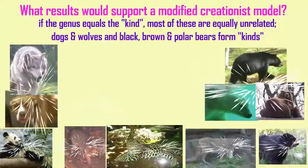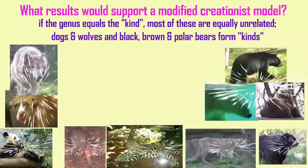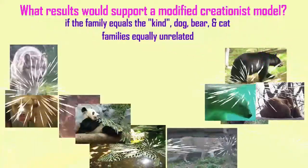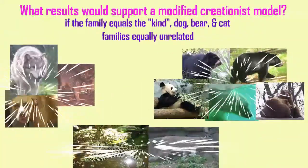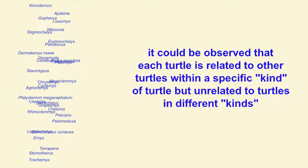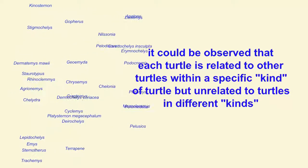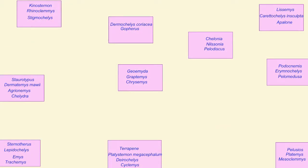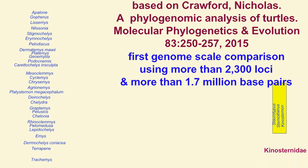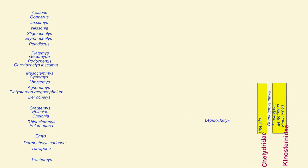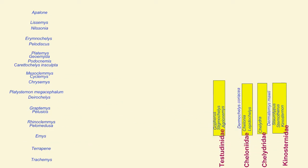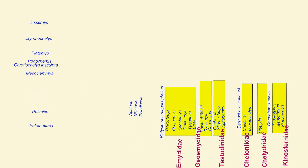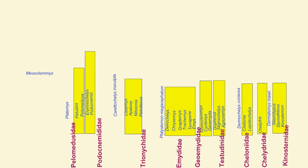Some creationists have modified the original creationist claim, saying that evolution can occur within a group — a kind — but that no kind could evolve from another. That's a hypothesis which can be tested, because one can look for these kinds which have shared a recent common ancestry in the past couple thousand years, versus organisms which are unrelated.